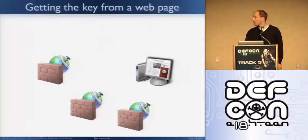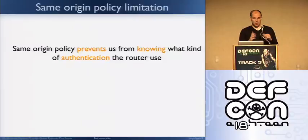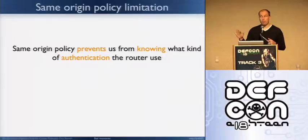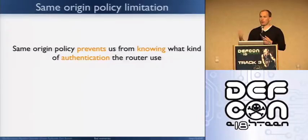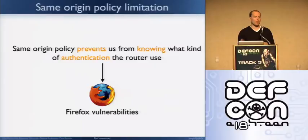There are two kinds of routers in the world. One uses web authentication — a login form like you see on Facebook or Gmail, with username and password inside an HTML form. The other uses basic authentication — an ugly pop-up with username and password. We need to know which one you're using because the type of attack differs. The same origin policy prevents us from reading the page, so we have no idea which authentication is used. Fortunately, we found one or two bugs in Firefox — currently reported — which allow us to determine with 100% accuracy which kind of authentication is being used.